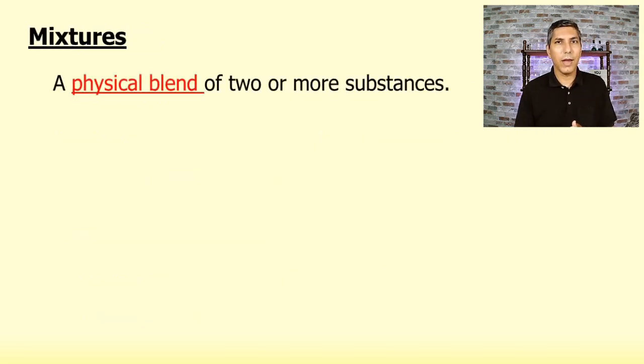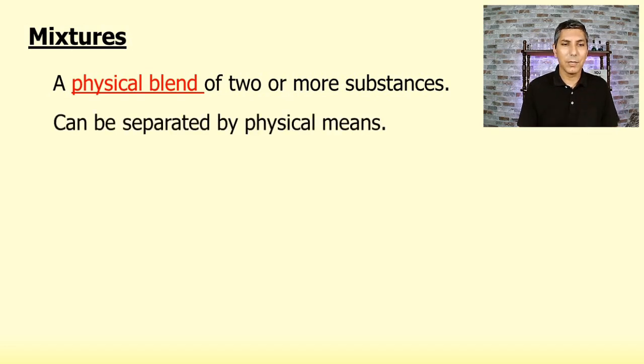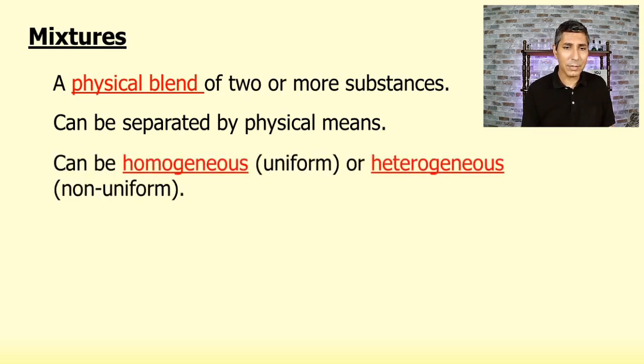Now, mixtures are a physical blending of two or more substances. Notice a compound that we talked about earlier, compounds are chemically fused together, which means you can only separate them chemically. Well, in the case of a mixture, since they're physically blended together, we can separate them physically as well. We can separate them by all kinds of physical means, which we'll talk about here shortly.